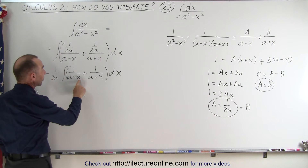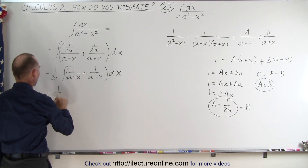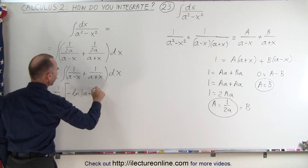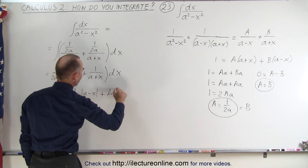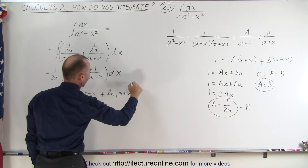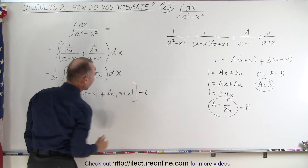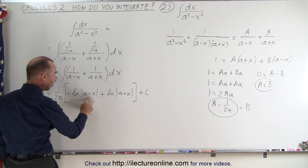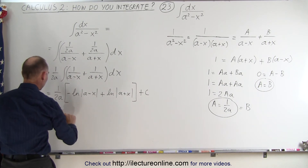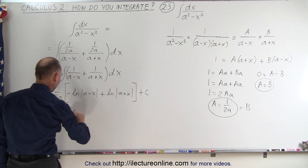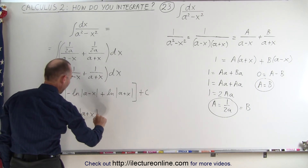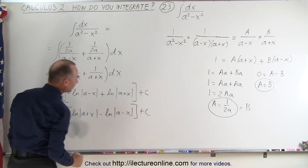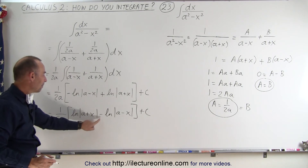Integrating, and noting that the a minus x term in the denominator contributes a negative sign, we get (1 over 2a) times the negative natural log of (a minus x) plus the natural log of (a plus x), plus a constant of integration. Reversing the order, this becomes (1 over 2a) times the natural log of (a plus x) minus the natural log of (a minus x), plus the constant of integration.